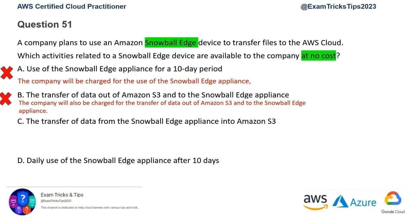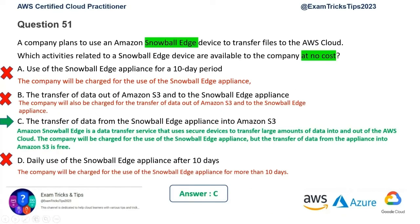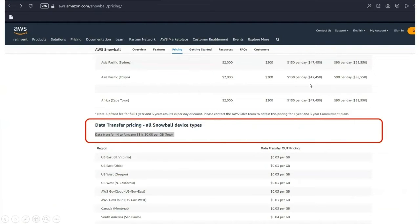This strategy from Amazon ensures people bring their data in free of cost, and because they're charged to move data out, they'll use Amazon's services for any data manipulation they need. You are charged for copying data from on-prem onto the device and device transportation, but when the device gets to Amazon, data transfer into S3 buckets is not chargeable because the cost is already covered. The last option — daily use of Snowball Edge after a certain period — is just there to mislead; there's no free usage of the device. So we got our answer: option C. AWS documentation confirms transfer into Amazon S3 is free, at $0.